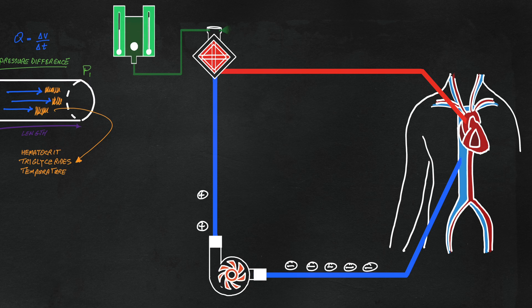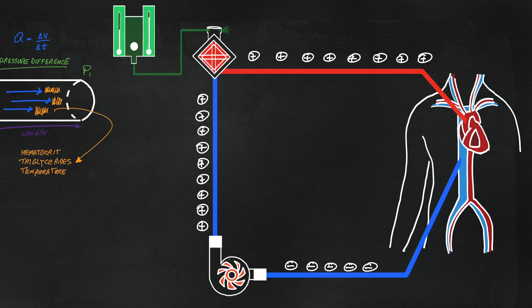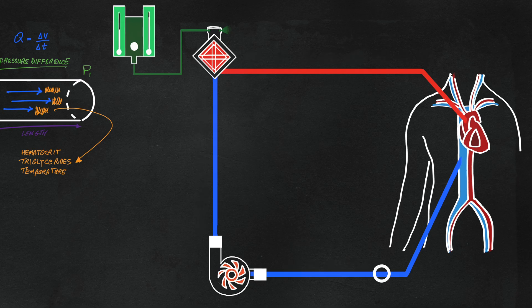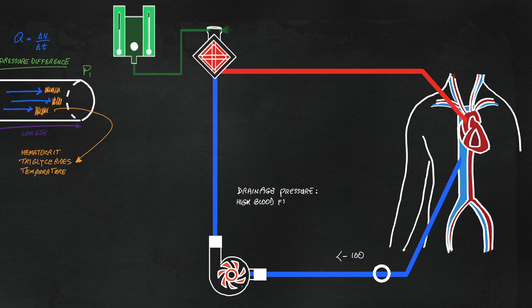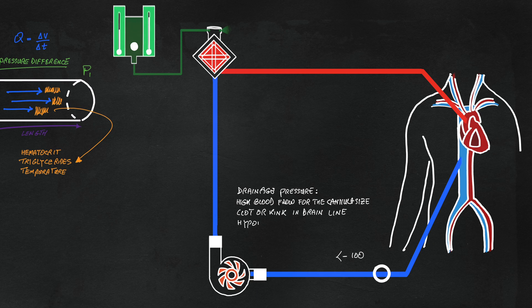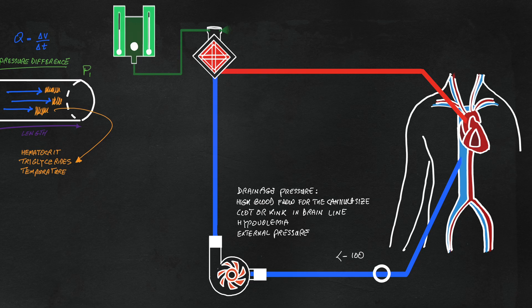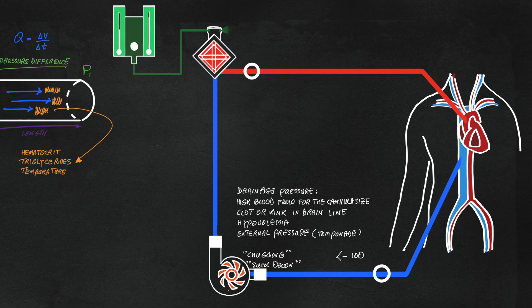In the ECMO circuit, pressures are negative pre-pump and positive post-pump. ECMO drain pressure can get affected by higher flow rates or change in tube diameter due to clot or kink. Clinically, this will manifest as chugging or suck down due to sudden rise in negative pressure.